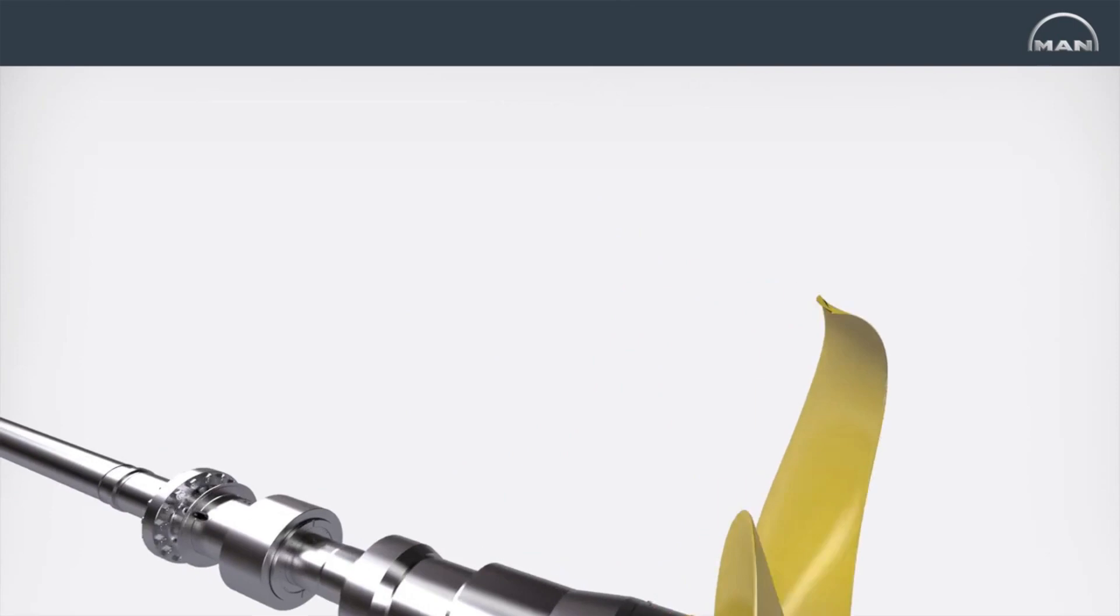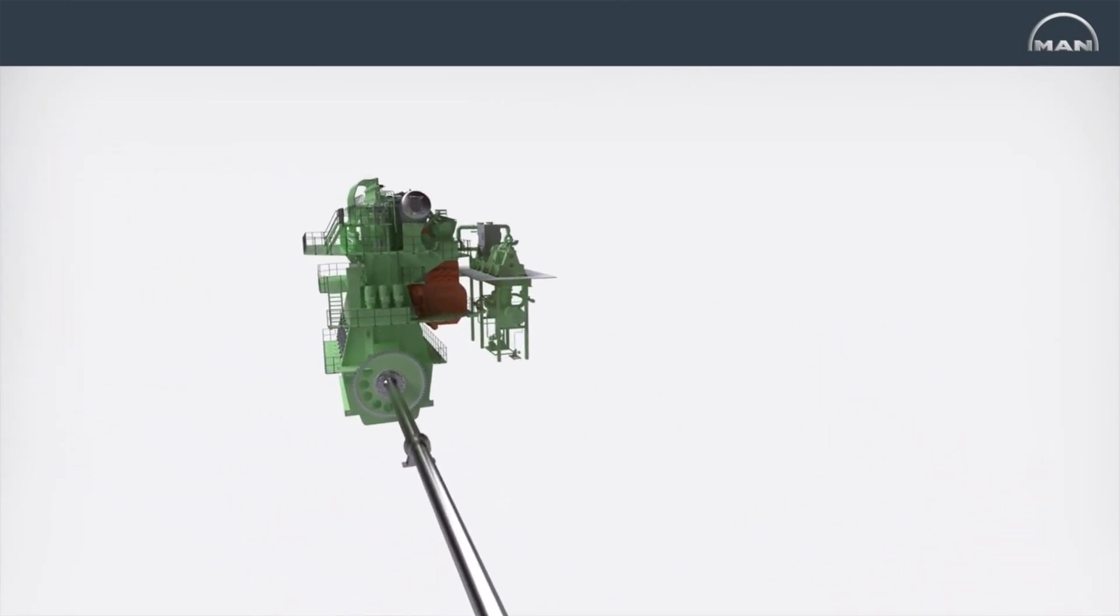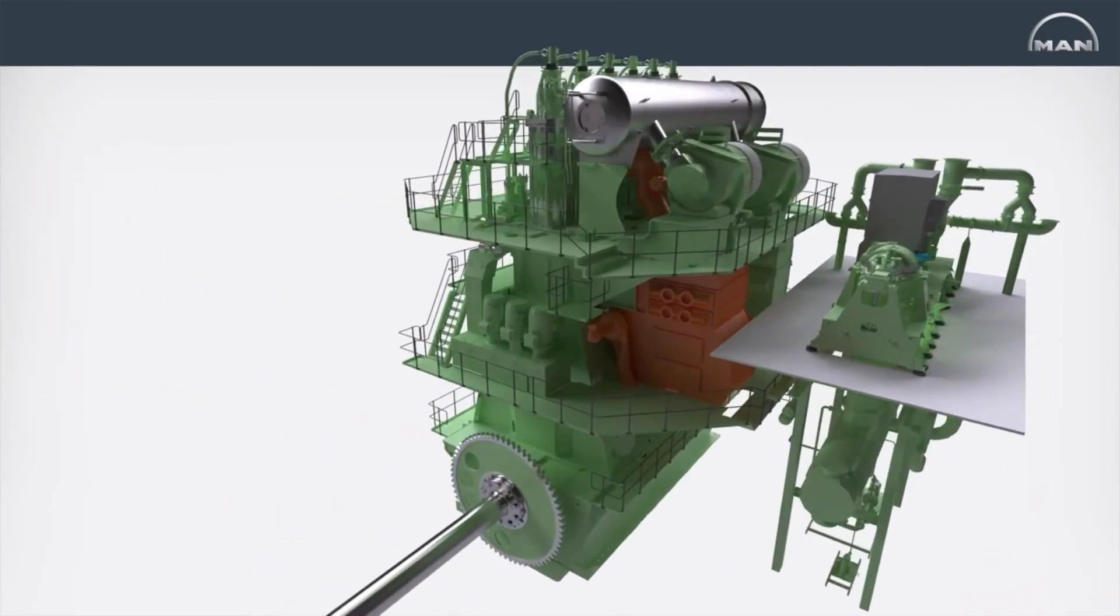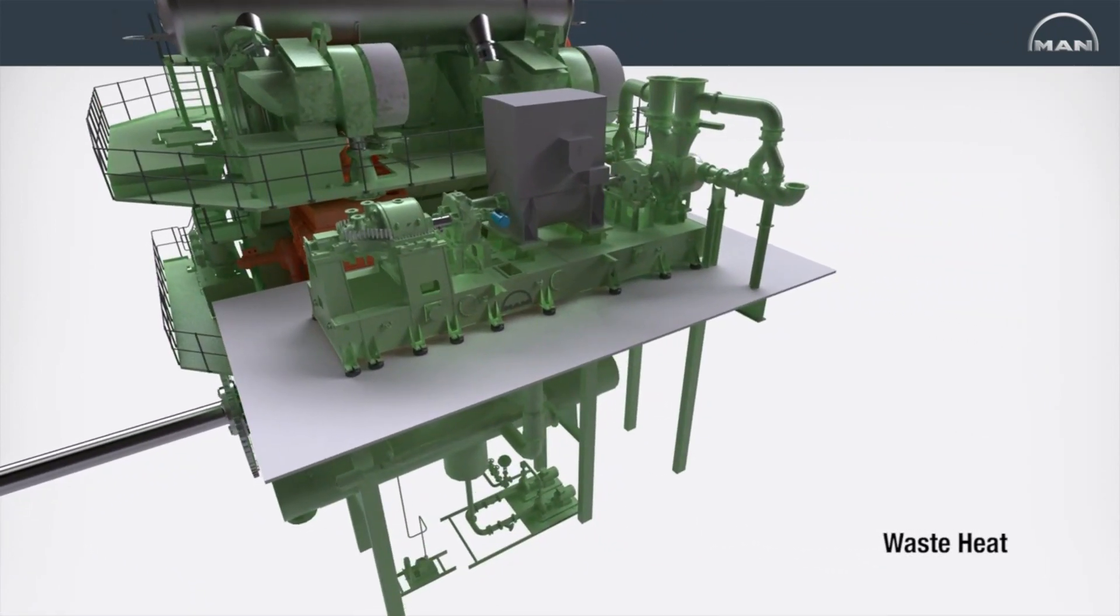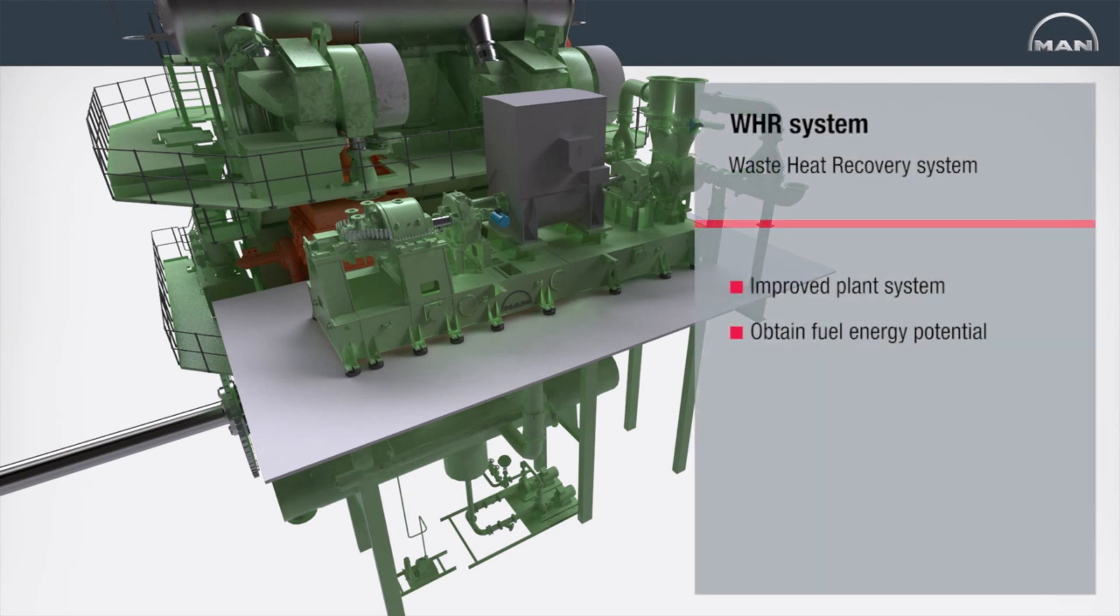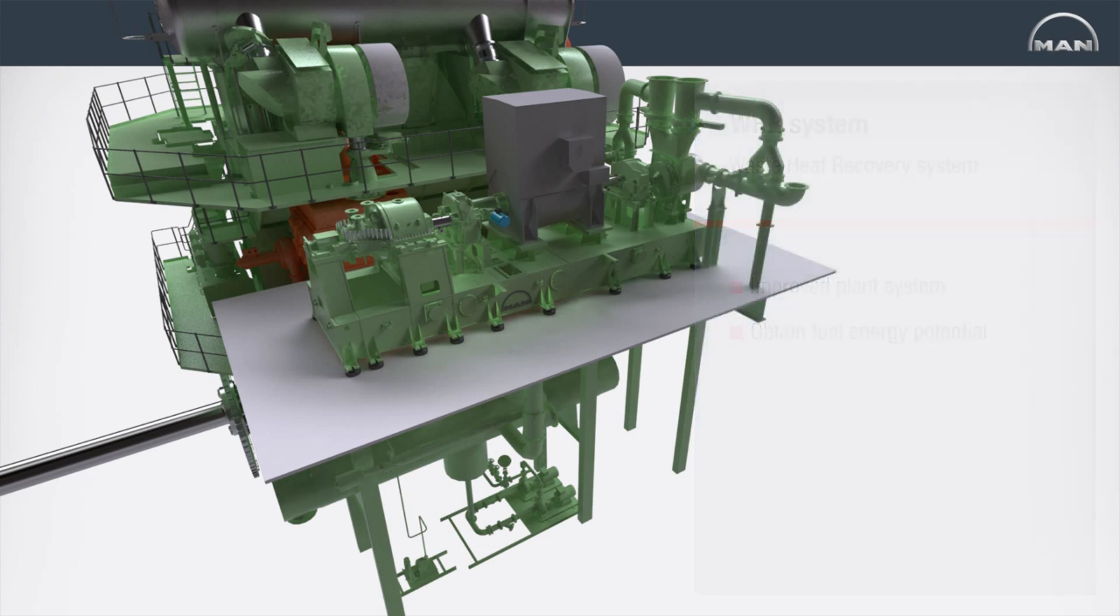The most efficient way to increase the total efficiency of a ship with a two-stroke engine is to utilize the engine's waste heat. This waste heat is primarily collected from the engine's exhaust gas. The MAN diesel and turbo developed waste heat recovery or WHR system utilizes the exhaust gas temperature to heat up steam, which in turn drives an ultra-efficient steam turbine.